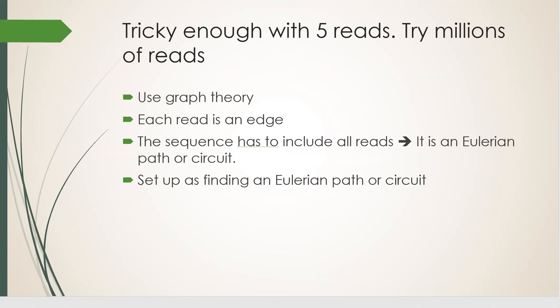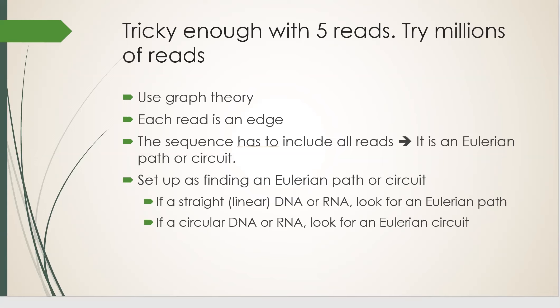Well, which is it? Path or circuit? That answer is not coming from math. It comes from biology. If the DNA or RNA is known to be linear, meaning it has a beginning and an end, we look for an Eulerian path. If the DNA or RNA is circular, then our solution must also be circular, so it means we're looking for an Eulerian circuit.